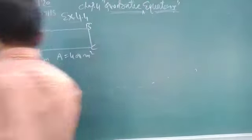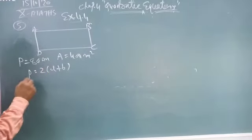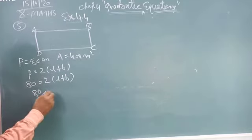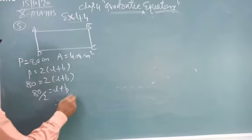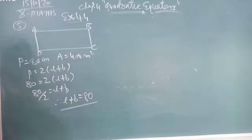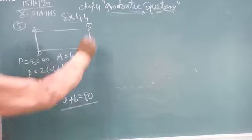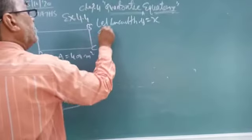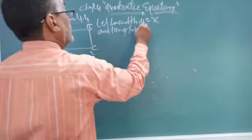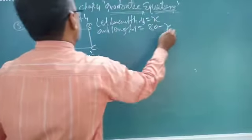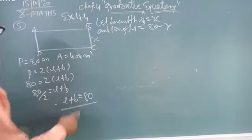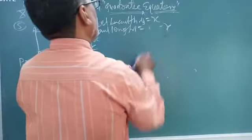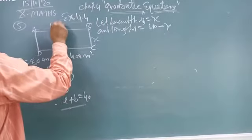So P equals 2 into L plus B. So perimeter is 80 equals 2 into L plus B. 80 upon 2 equals L plus B. Therefore, L plus B equals 40. Means length plus breadth is equal to 40. Let breadth is x and length is 40 minus x. This is x. Sorry, this is 40. So 80 upon 2 means 40. So you write here 40 minus x. This is 40 minus x.